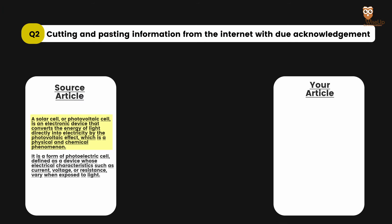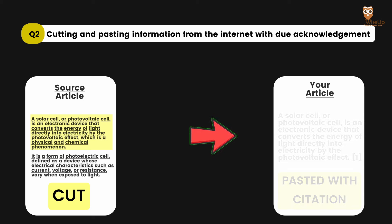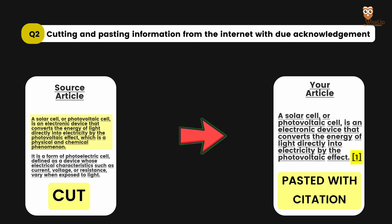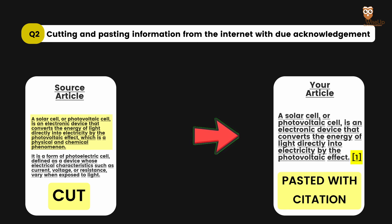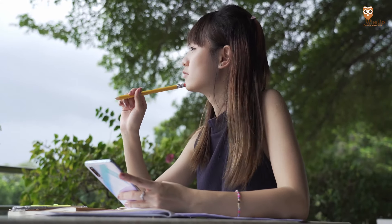Next: cutting and pasting information from the internet with due acknowledgement — basically taking information exactly word by word from any published article, but citing the source. Is this plagiarism or not plagiarism? Sorry to disappoint you, but this is also plagiarism. There's something very important missing here that is making the statement plagiarized.